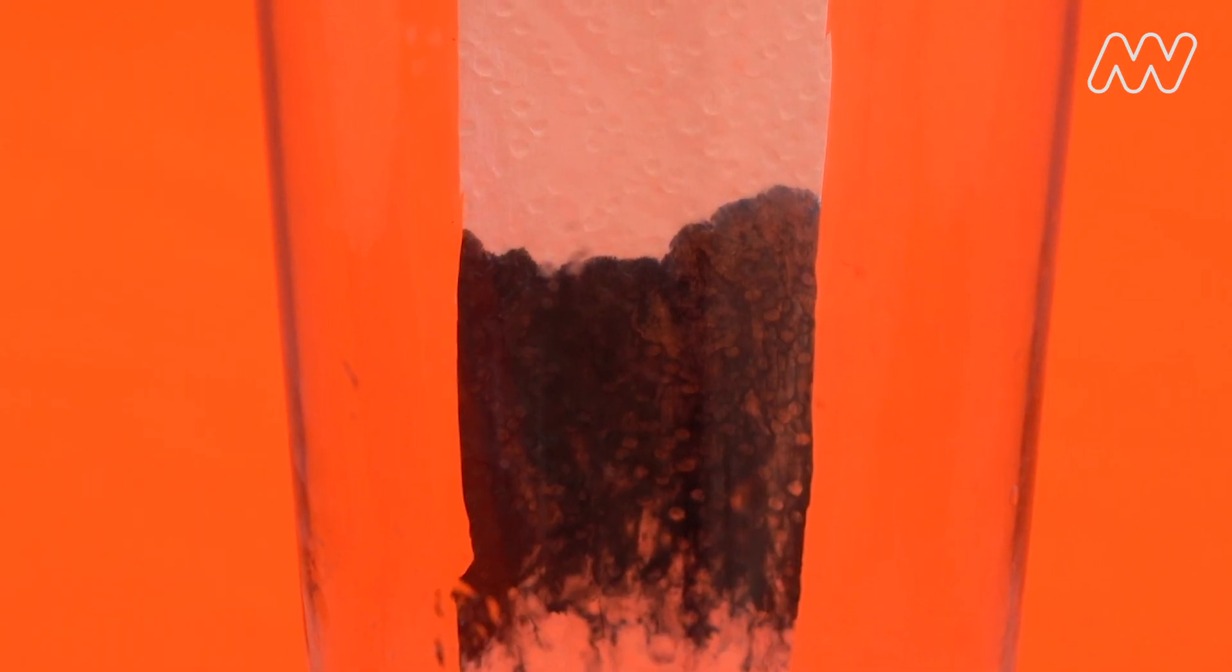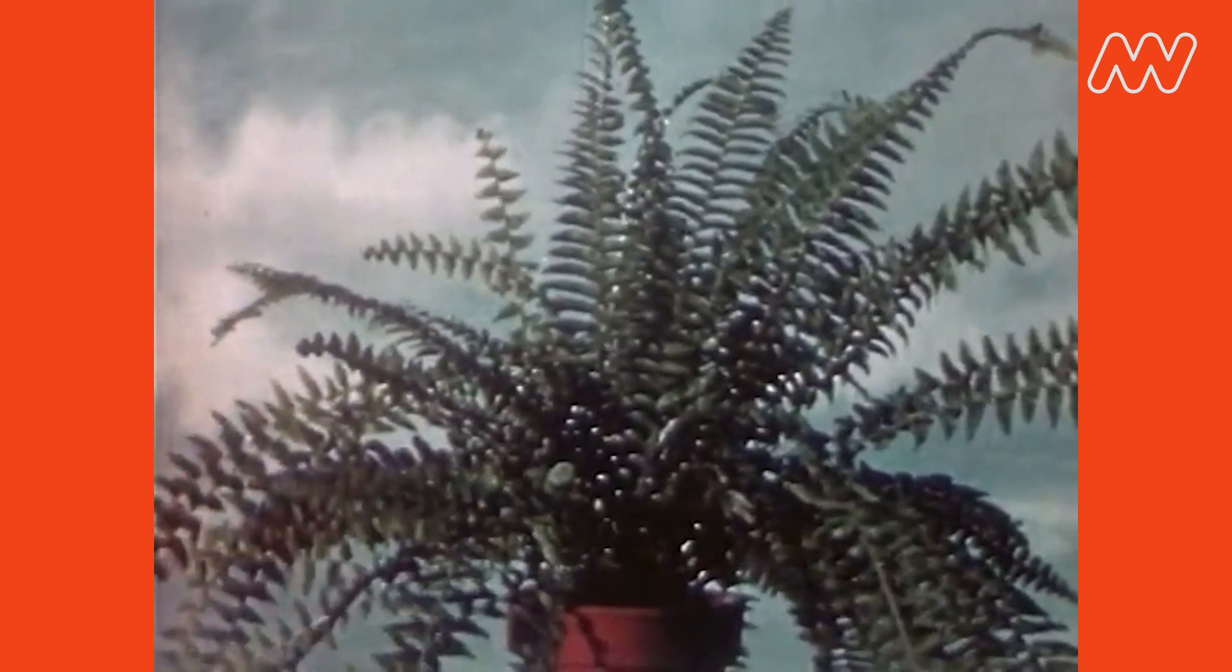The ink of our marker has water in it, so the color gets pulled up the paper as well. Capillary action is actually how plants pull water up from the ground.